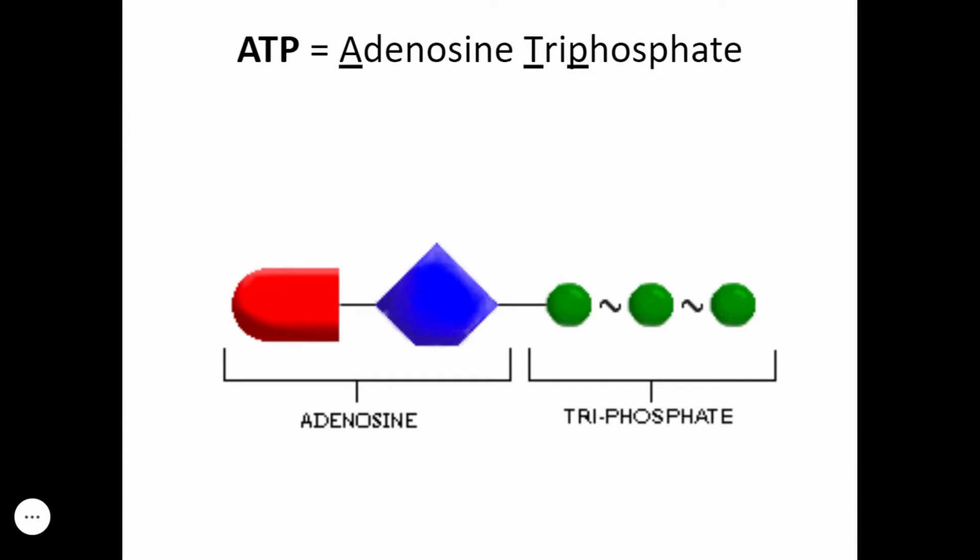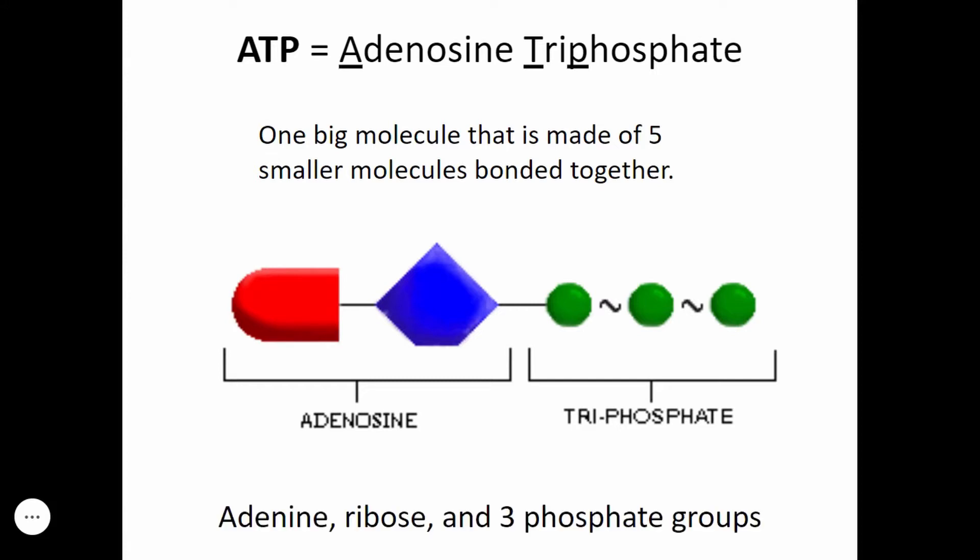ATP, as you all know, stands for adenosine triphosphate. It is one big molecule made of five smaller molecules bonded together. It's made of an adenine, a ribose sugar, and three phosphates.